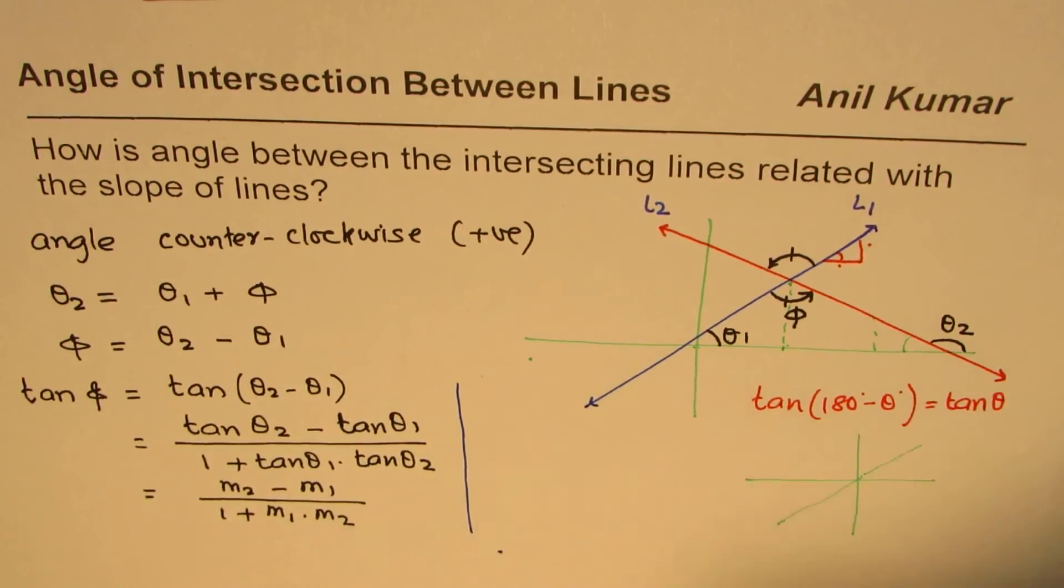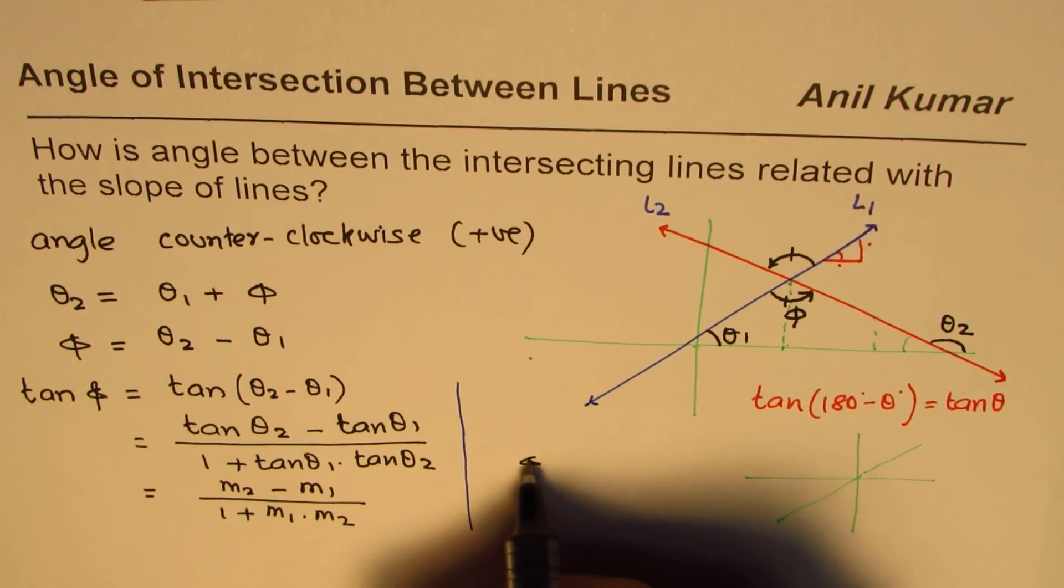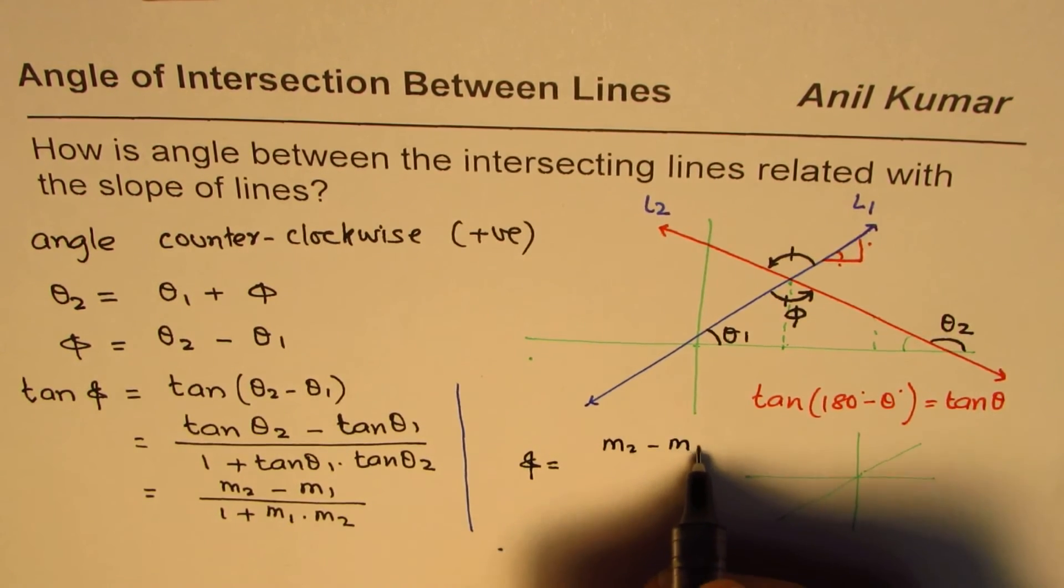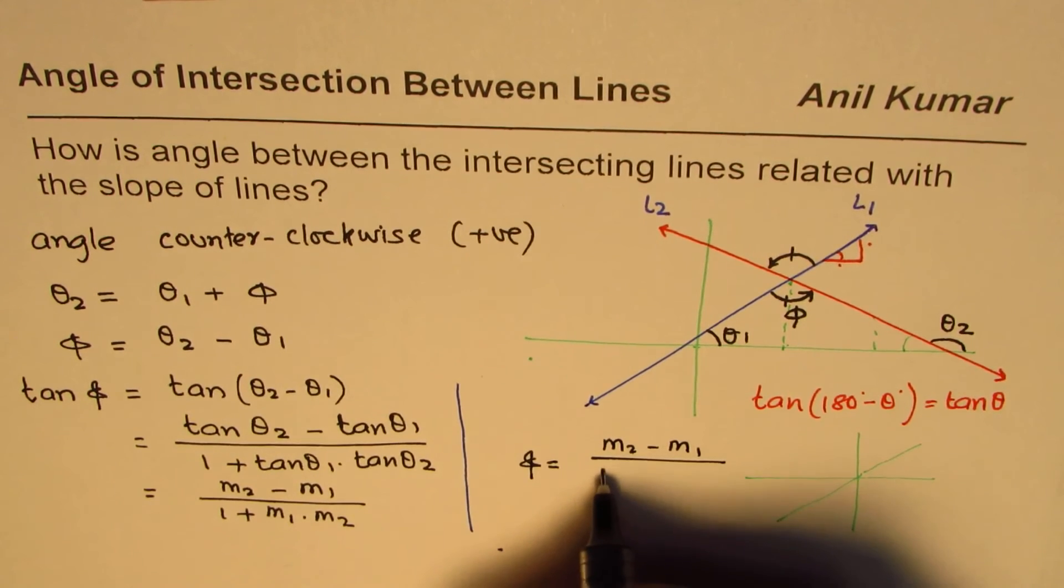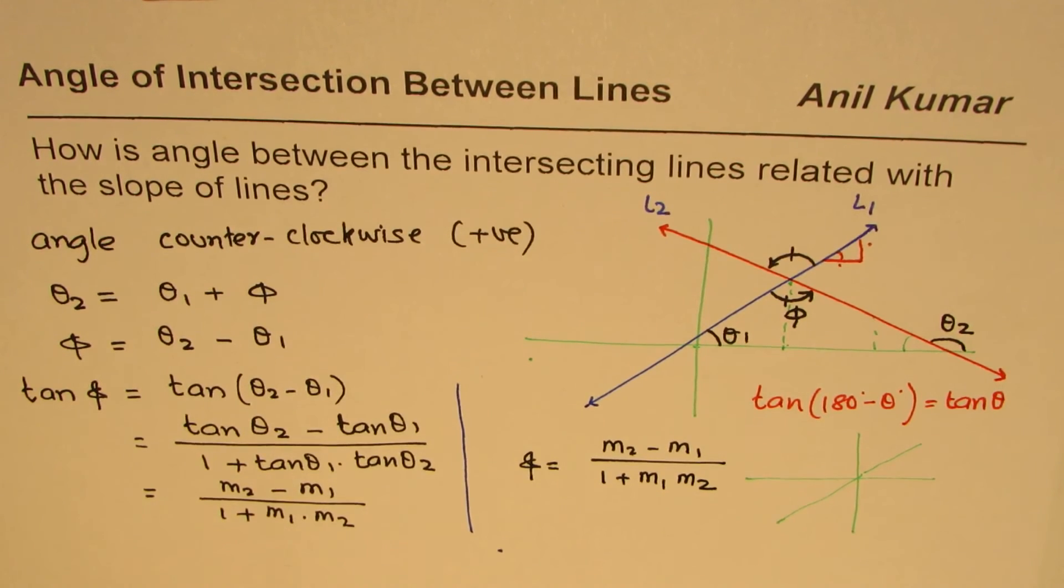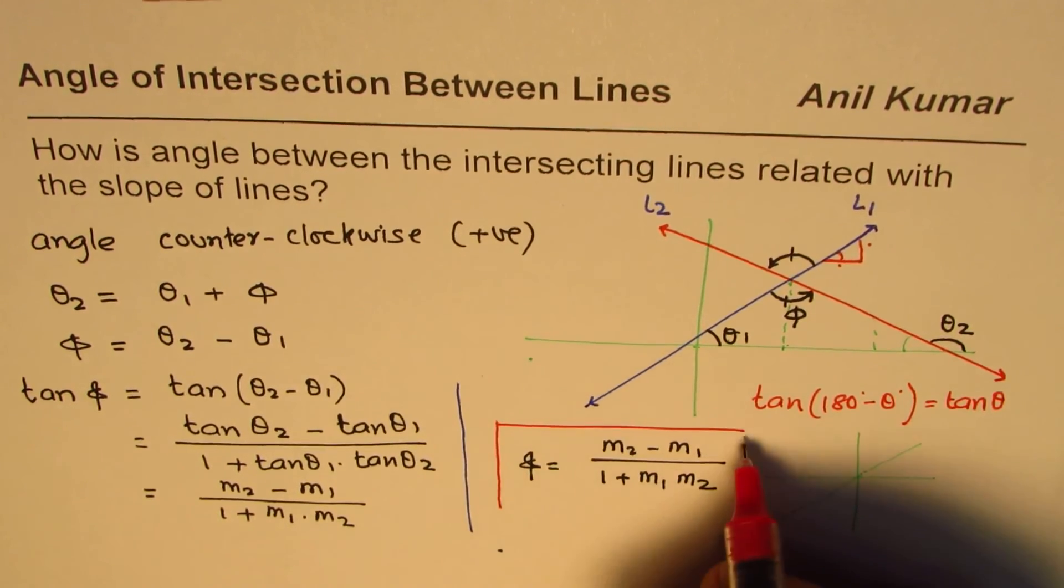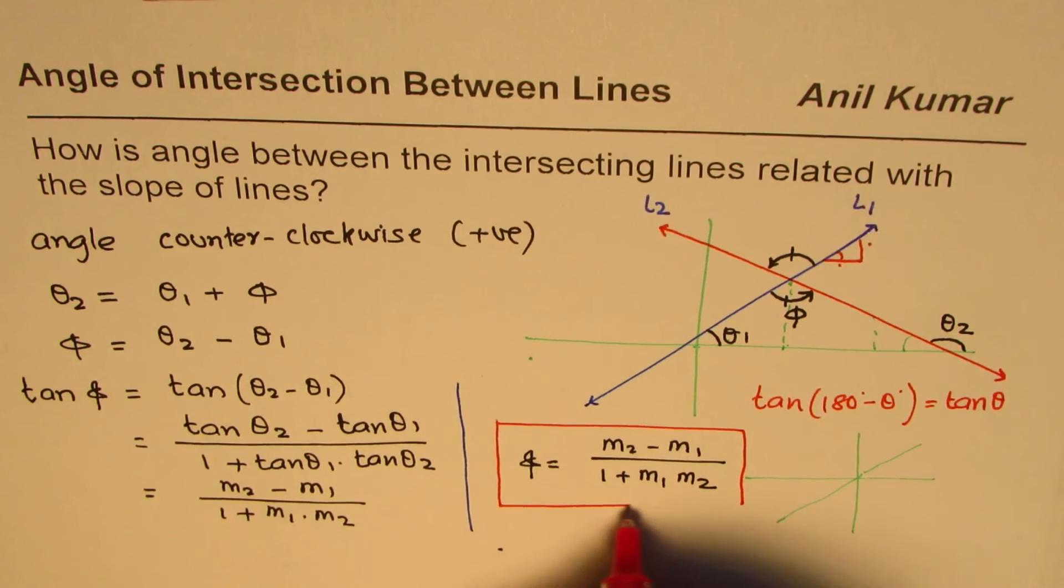So now from here we get our formula, the angle equals difference of slope divided by 1 plus product of these slopes. So that becomes a general formula to find angle between intersecting lines.